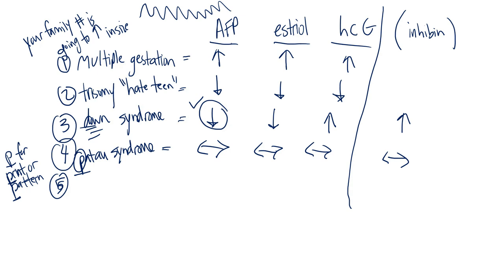The last one is neural tube defects, like spina bifida and anencephaly. The way I remember this is: what is the source for neural tube defects? What's the main cause? Folate deficiency.